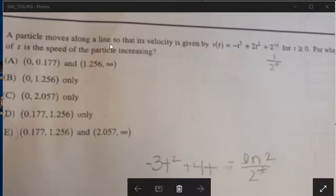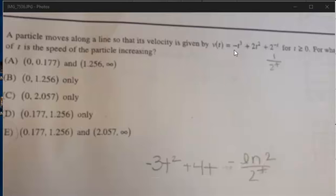We're given the problem that a particle moves along a line so that its velocity is given by v(t) = -t³ + 2t² + 2^(-t). And we want to know for what values of t is the speed of the particle increasing.